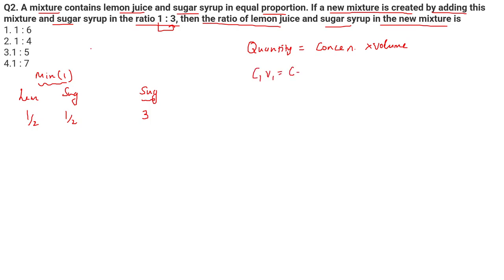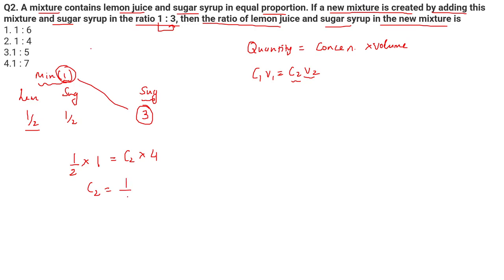So on lemon, I can apply C1V1 = C2V2: initial concentration of lemon times initial volume equals final concentration times final volume. The initial concentration of lemon is half (half by one), and initial volume V1 is one. I don't know the final concentration C2, and the final volume — since I'm taking one part of this and three parts of sugar — becomes four parts. From here I get C2 = 1/8. So if the total mixture is 8, lemon is one part and sugar is the remaining 7 parts. The answer is 1:7.